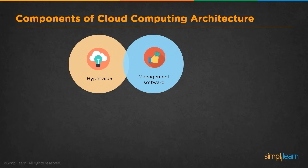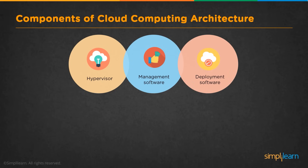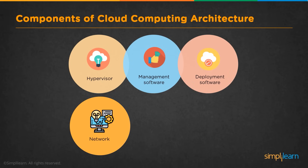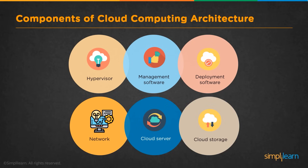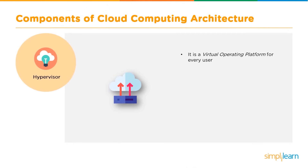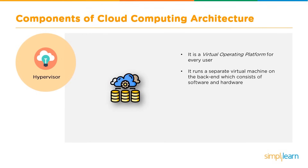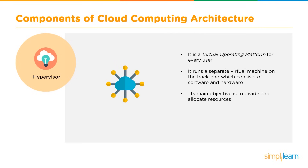The different components of cloud computing architecture are: the hypervisor, management software, deployment software, network, cloud server, and cloud storage. The hypervisor is a virtual operating platform used by every user — it runs a separate virtual machine on the back-end consisting of software and hardware. Its main objective is to divide and allocate resources; it is primarily used to virtualize physical machines so they can be shared across many users.